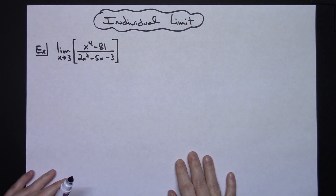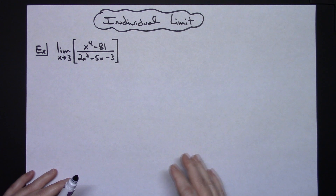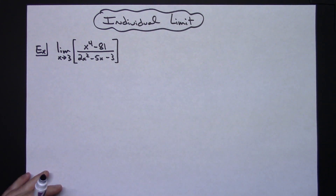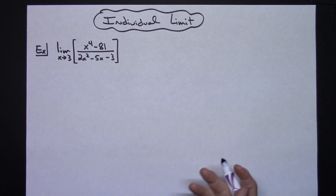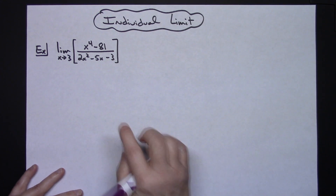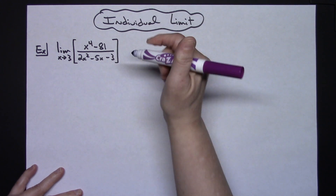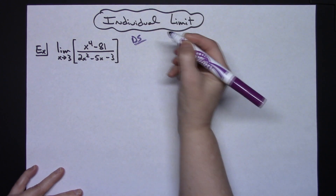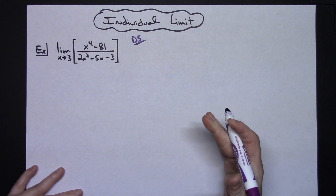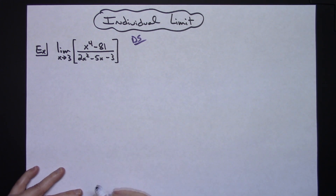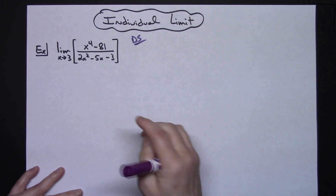In this video I'm going to work out an individual limit. It's pretty much going to be a straightforward algebraic approach, because that's usually one of the first beginning types of limits that Calculus 1 students start with. So the first thing I'm going to do is a direct substitution, because you should always do that to make sure you have an indeterminate form before you start your algebraic manipulation.